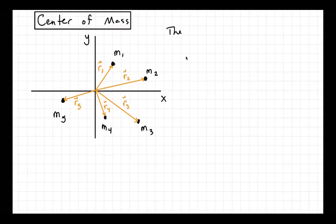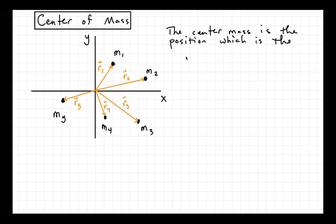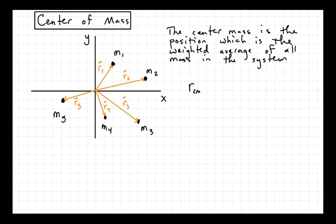So let me write that down. The center of mass is a weighted average — it's the position which is the weighted average of all the mass in the system. So it's really just a weighted average. We can write down what a weighted average would mean in this context. We call this r sub CM, and that's going to be the sum of all the masses in the system times their position vector.